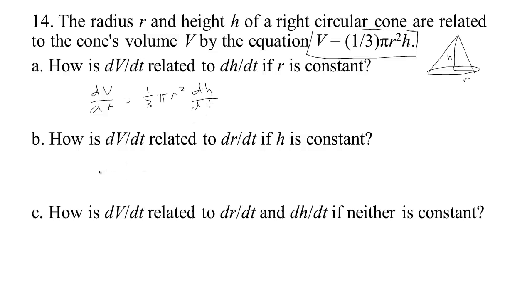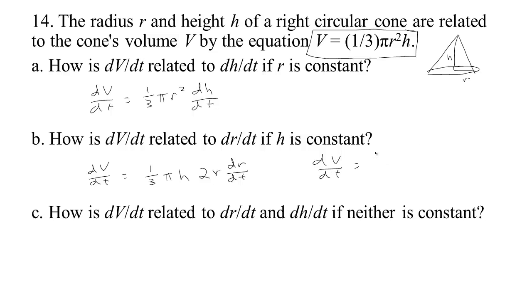Or we could assume that h is a constant. Then dV/dt, taking the derivative with respect to t, would be (1/3)πh — because h is a constant — times the derivative of r², which would be 2r · dr/dt by the generalized power rule. So we have dV/dt = (2/3)πhr · dr/dt in that case.